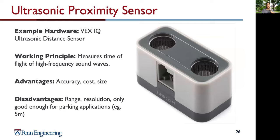The ultrasonic proximity sensor — here the VEX IQ ultrasonic distance sensor — has good accuracy, is super cheap, and has a small size. Ultrasonic sensors have been used in automotive technology for a long time for parking applications. The range and resolution are not sufficient for autonomous driving applications like AEB. The ultrasonic proximity sensor works by measuring the time of flight of high frequency ultrasonic sound, and is mostly used in parking applications to detect distance to another vehicle.